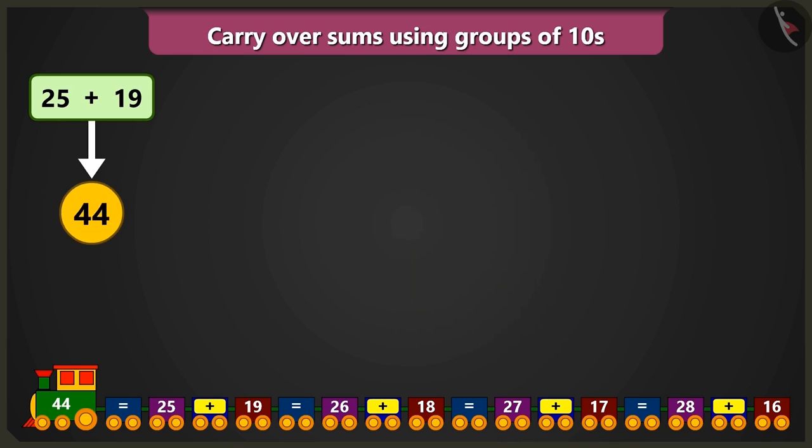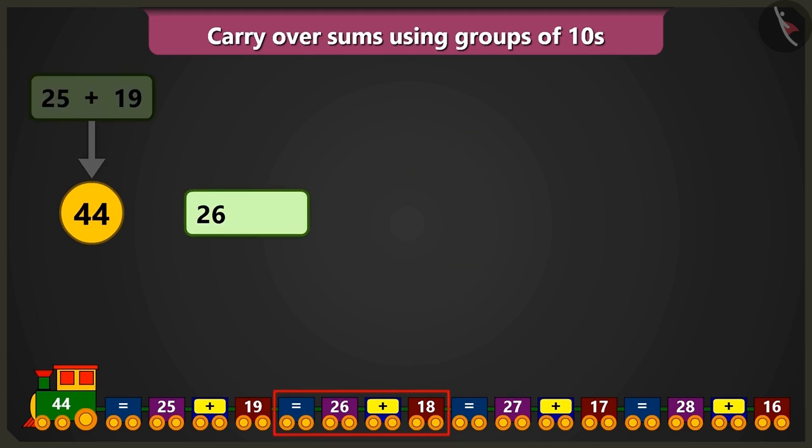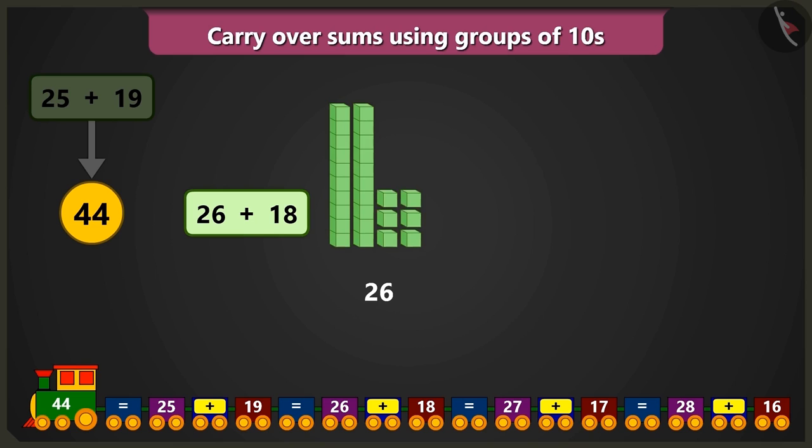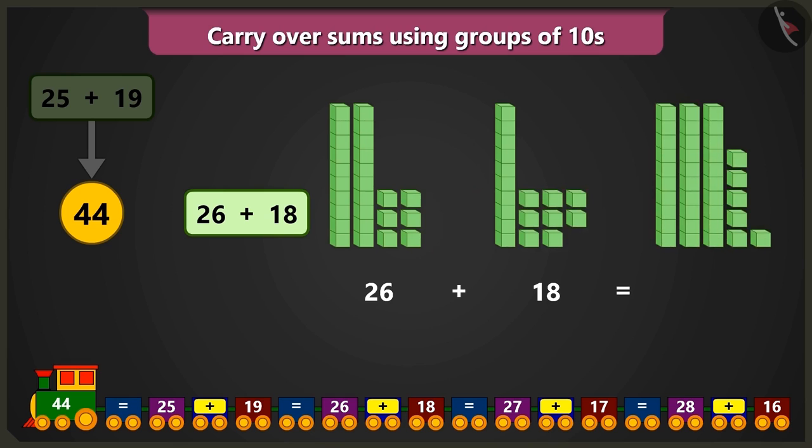Now, will the other numbers of this train, 26 and 18 also add up to 44? Yes. Come on. Let us add 26, which is 2 tens and 6 ones, to 18, which is 1 tens and 8 ones. Adding 6 ones and 8 ones will result in 14.